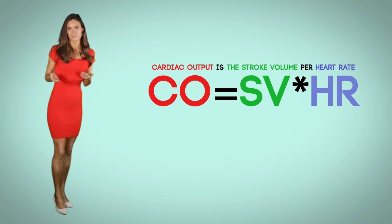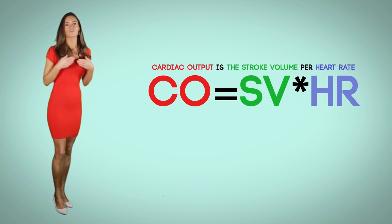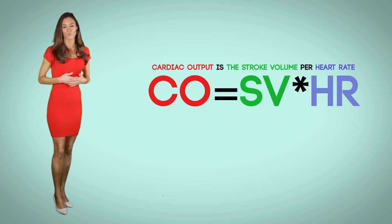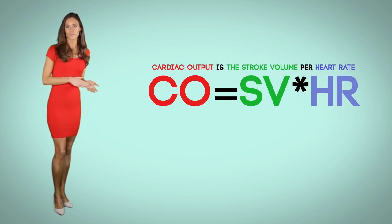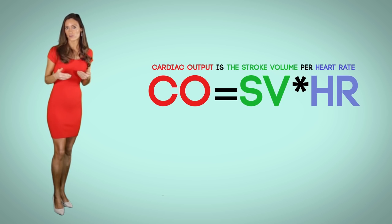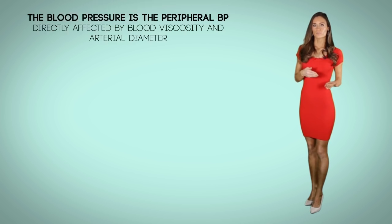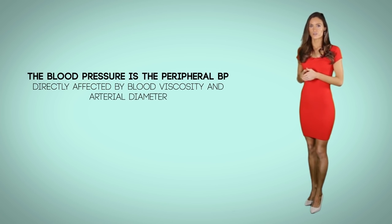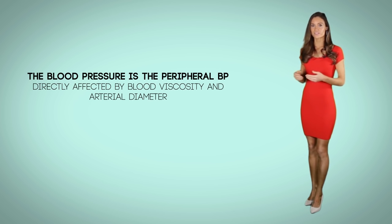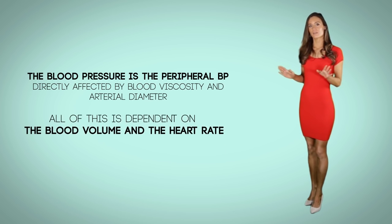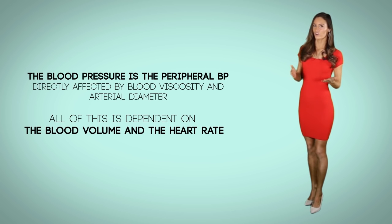Think of it this way: contractility is pumping, but the pump needs liquid to pump, which is volume. Whatever is pumped out is the output. This shows the stroke volume, which is the blood volume ejected over time. The relationship here is direct. Blood pressure is the peripheral blood pressure directly affected by blood viscosity and arterial diameter, all of which is dependent on blood volume and heart rate.